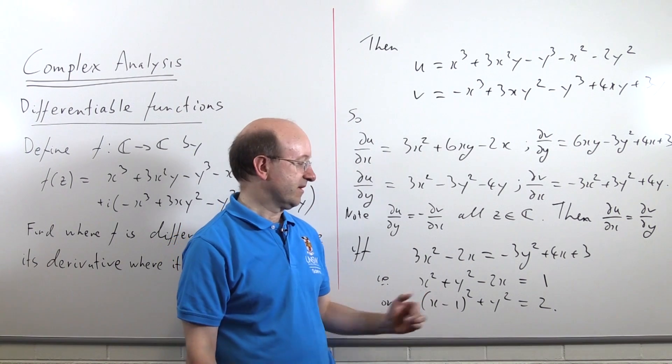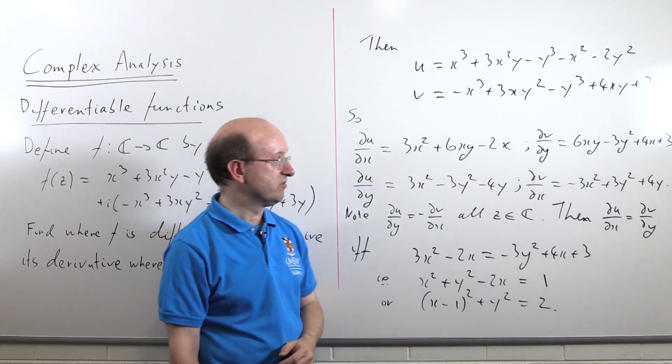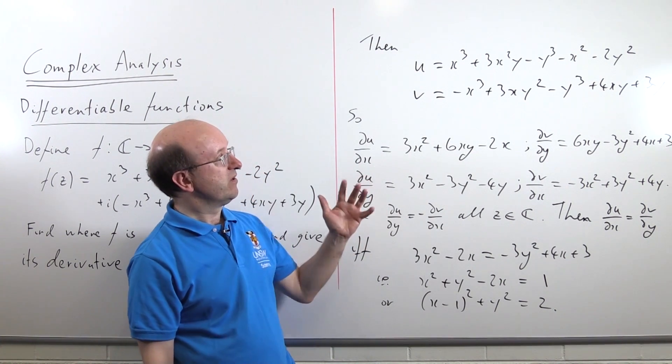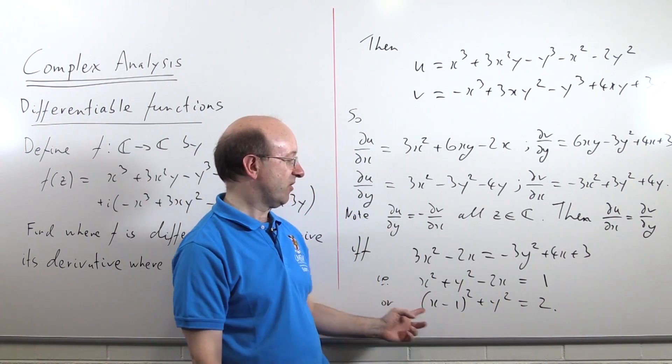So, this is a circle centered at 1 of radius square root of 2. So, the only place where this function we're dealing with can be differentiable is on this circle.